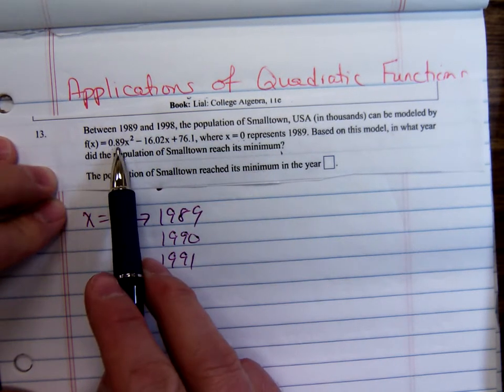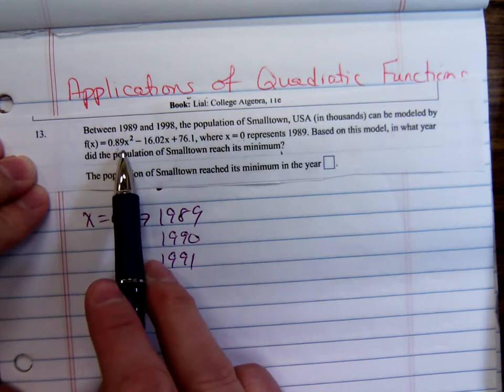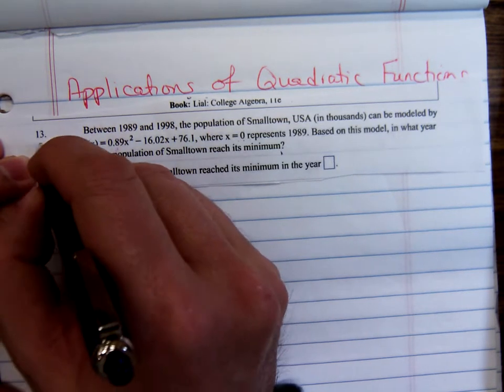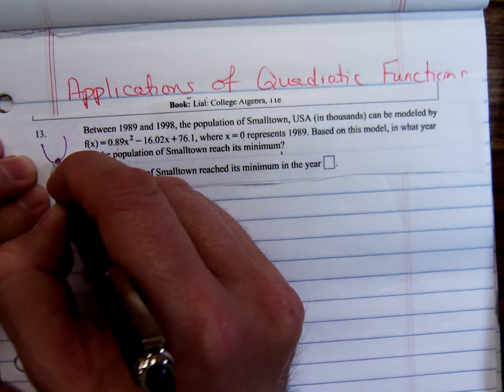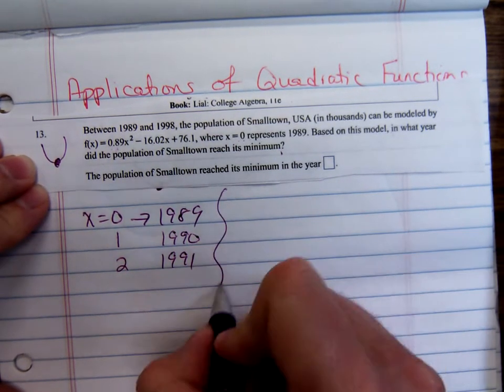This thing is opening how? Up or down? That first number there, a is positive, so it's opening up. So the minimum is occurring at the vertex. We're going to do the vertex formula.